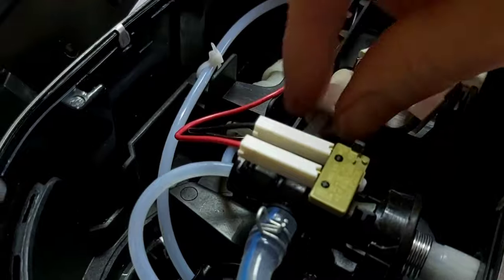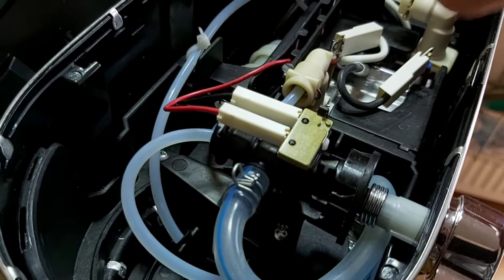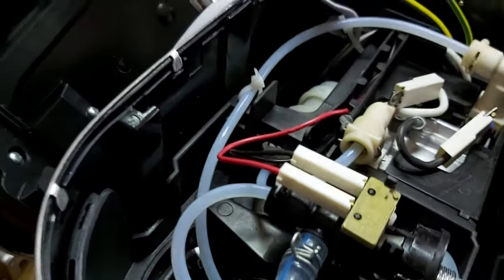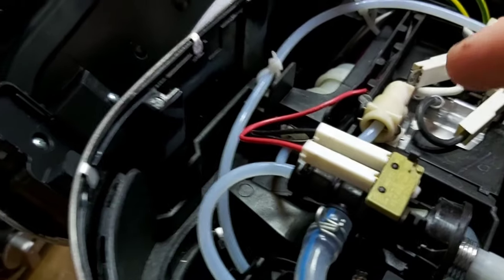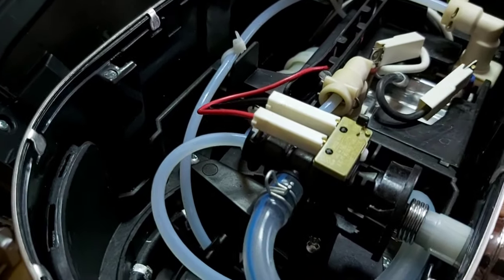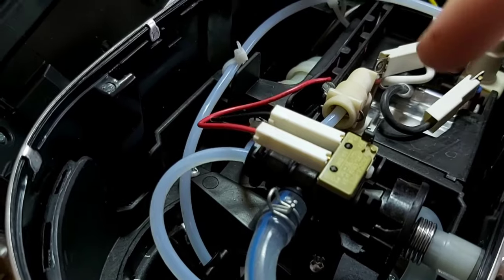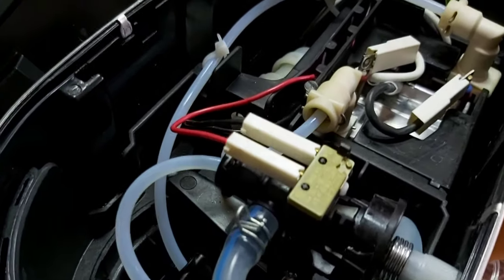and then pull out the pipe. Now, be careful that might be pressurized and it might have hot water in it. But, when you pull it out, what happened to mine is it spurted water and there was a little seal in there, a little O-ring, which I'll show you.